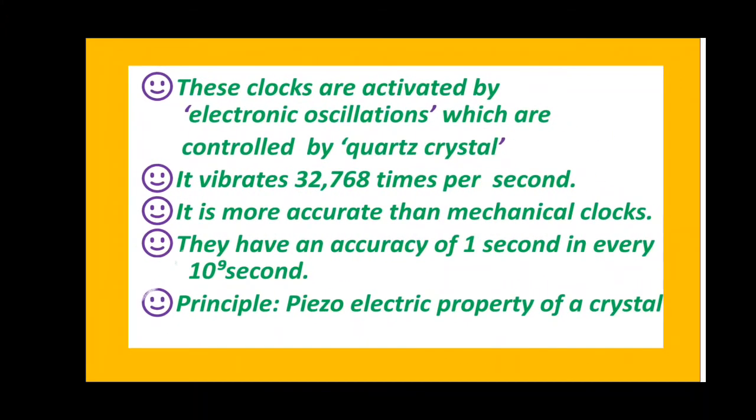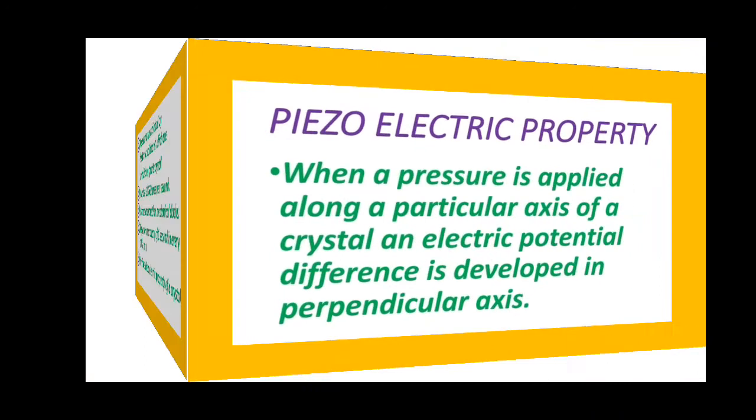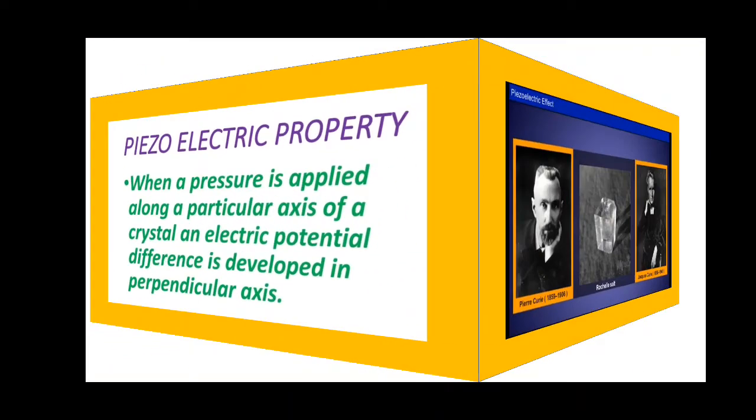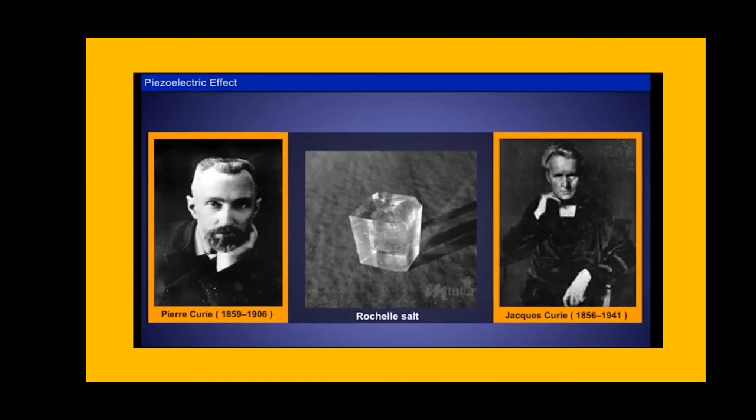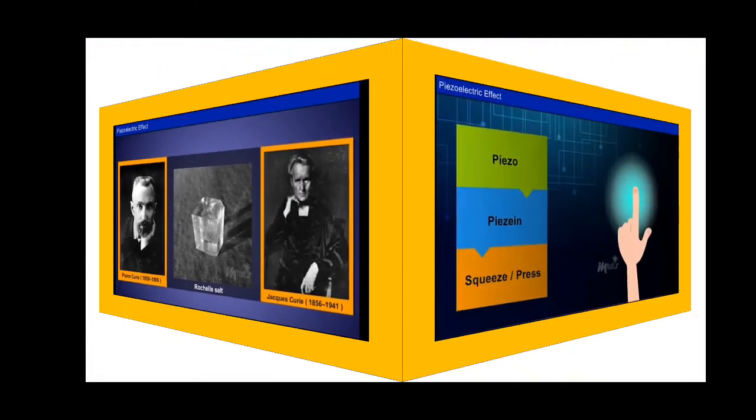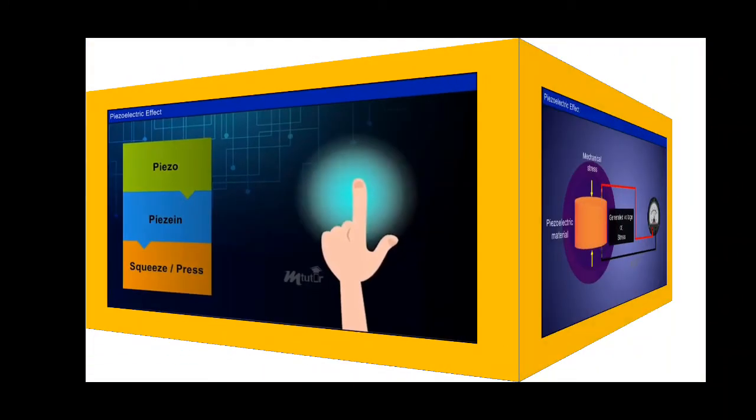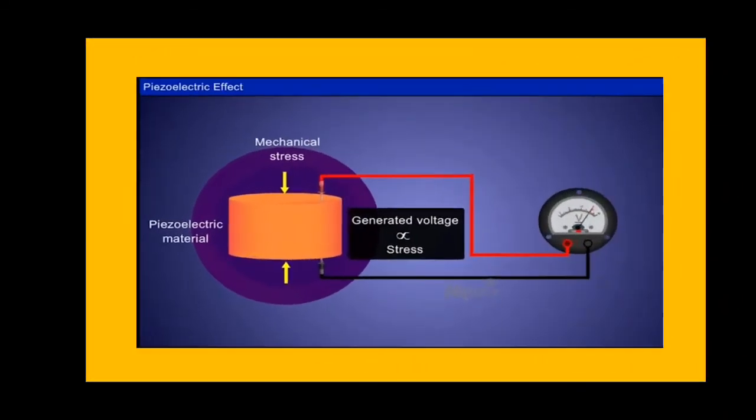What do you mean by piezoelectric property? When a pressure is applied along a particular axis of a crystal, an electric potential difference is developed in the perpendicular axis. It was given by the Curie brothers, Pierre Curie and Jacques Curie. The word piezo is derived from the Greek word piezein which means to squeeze or press.